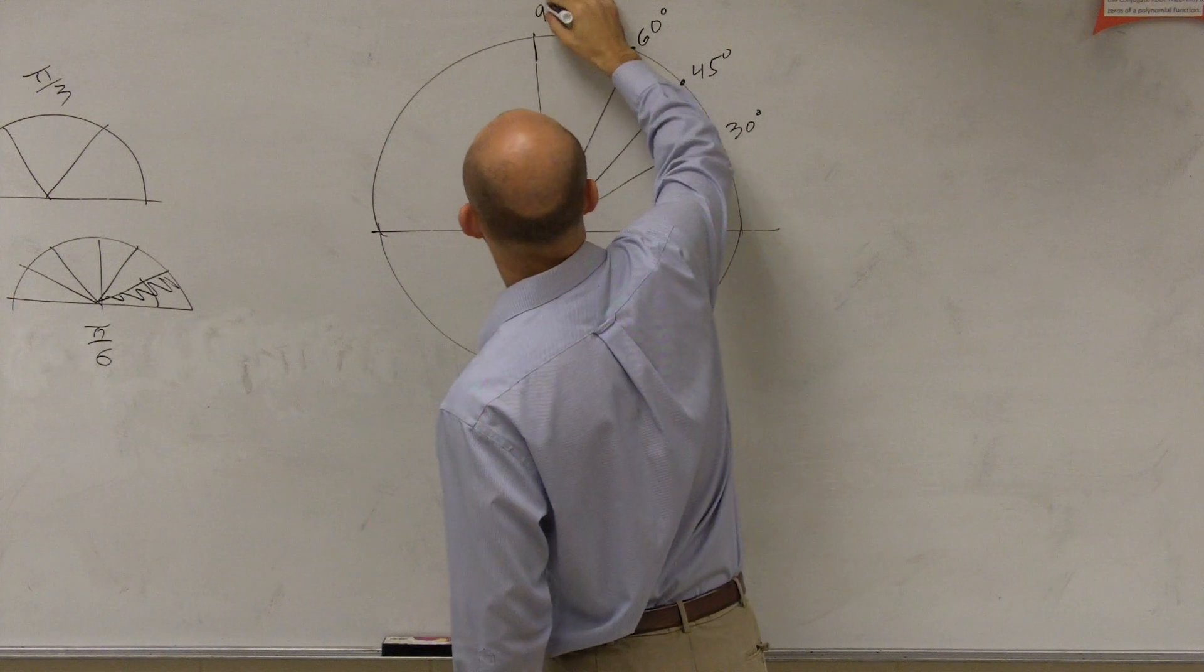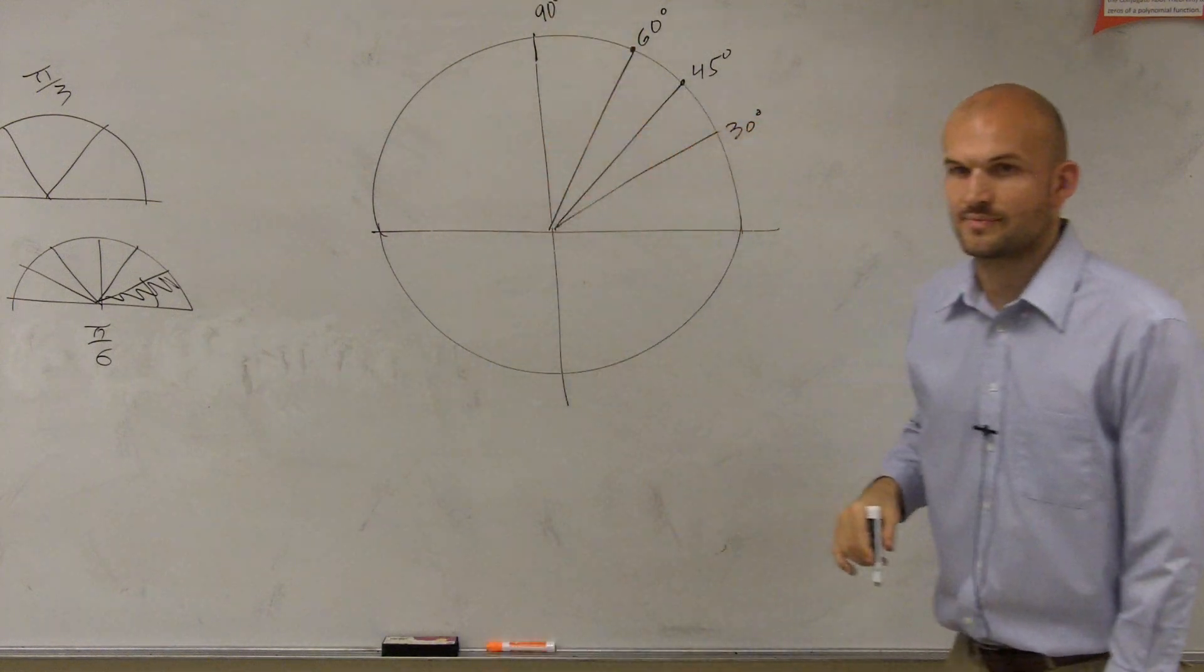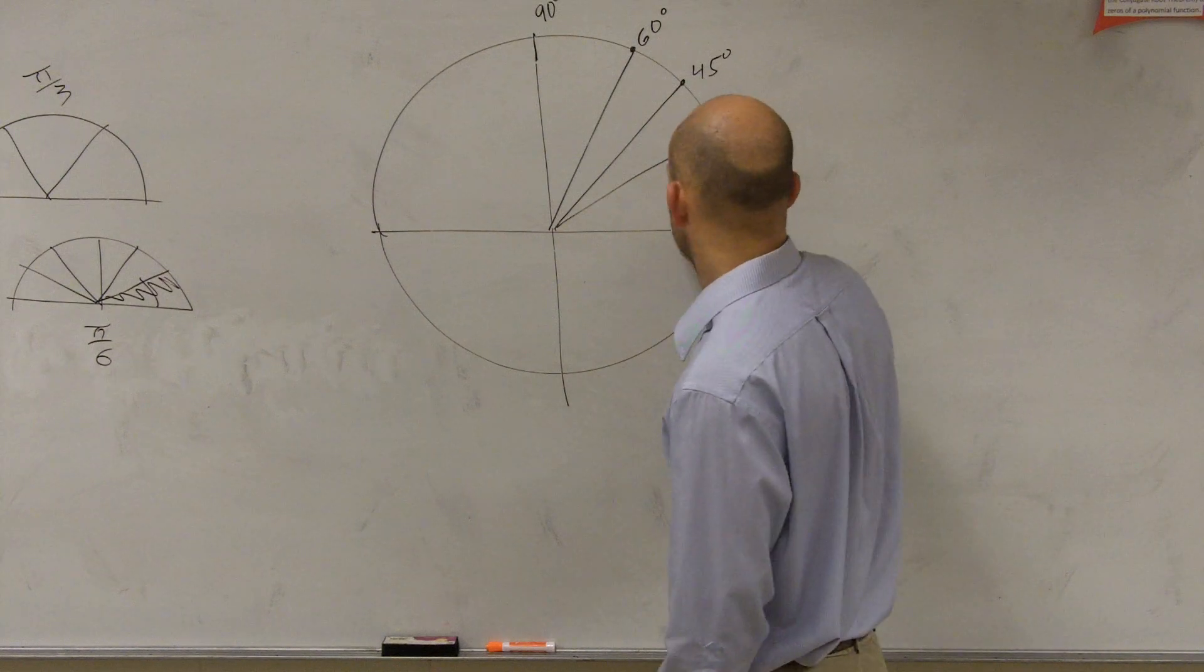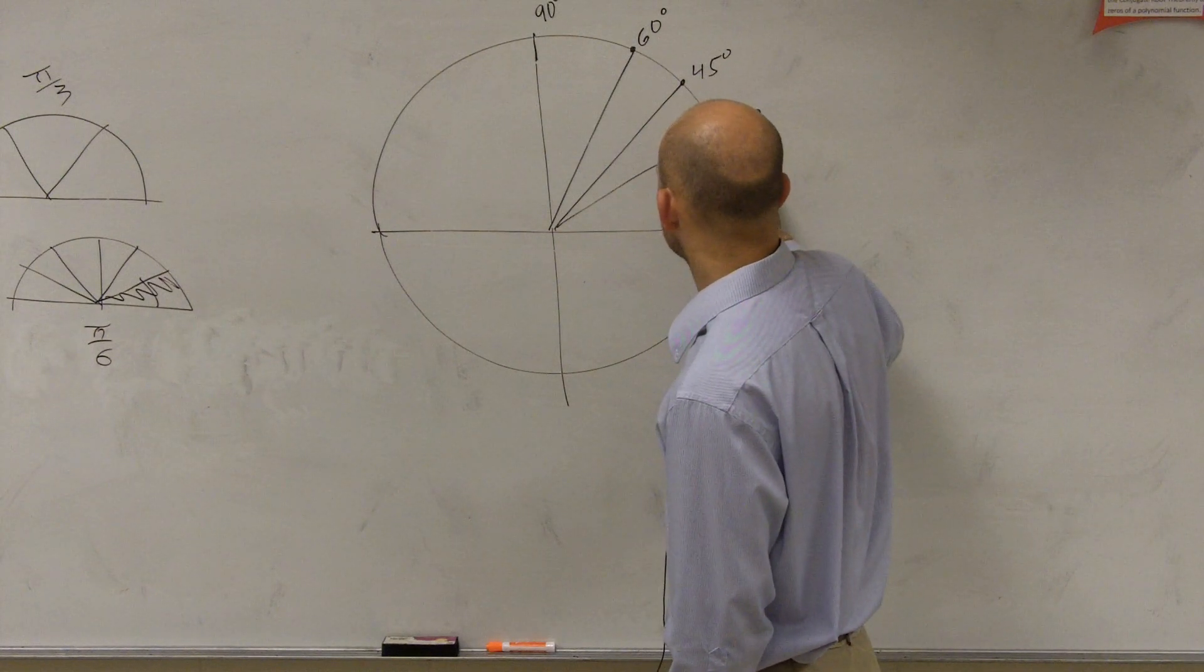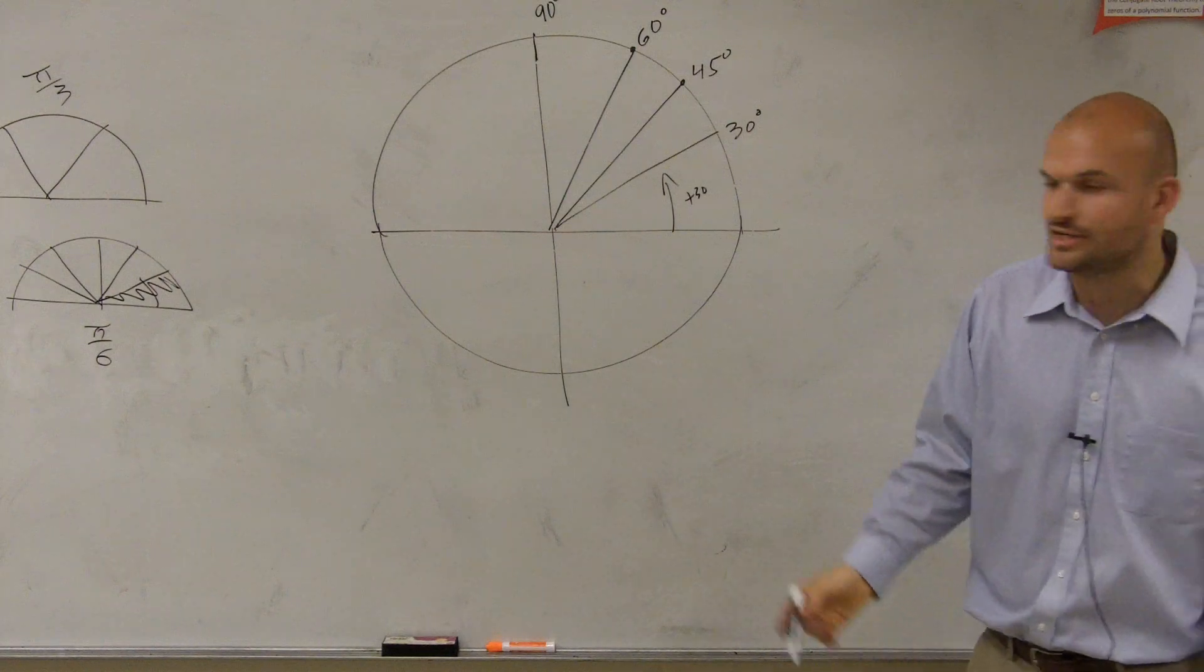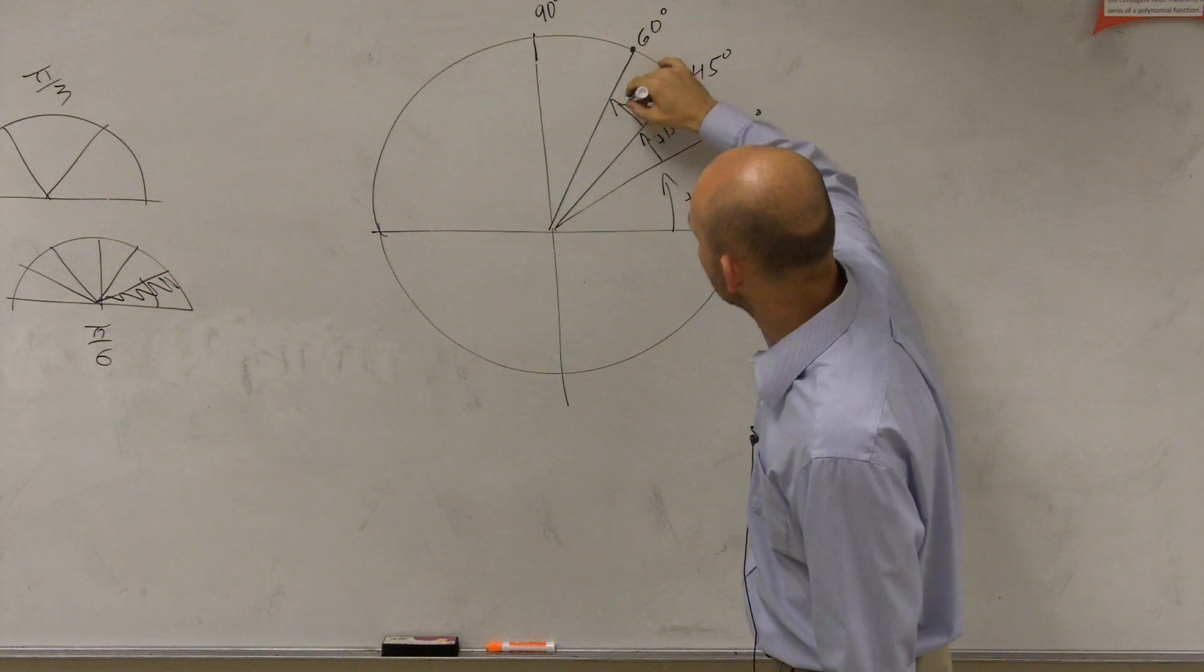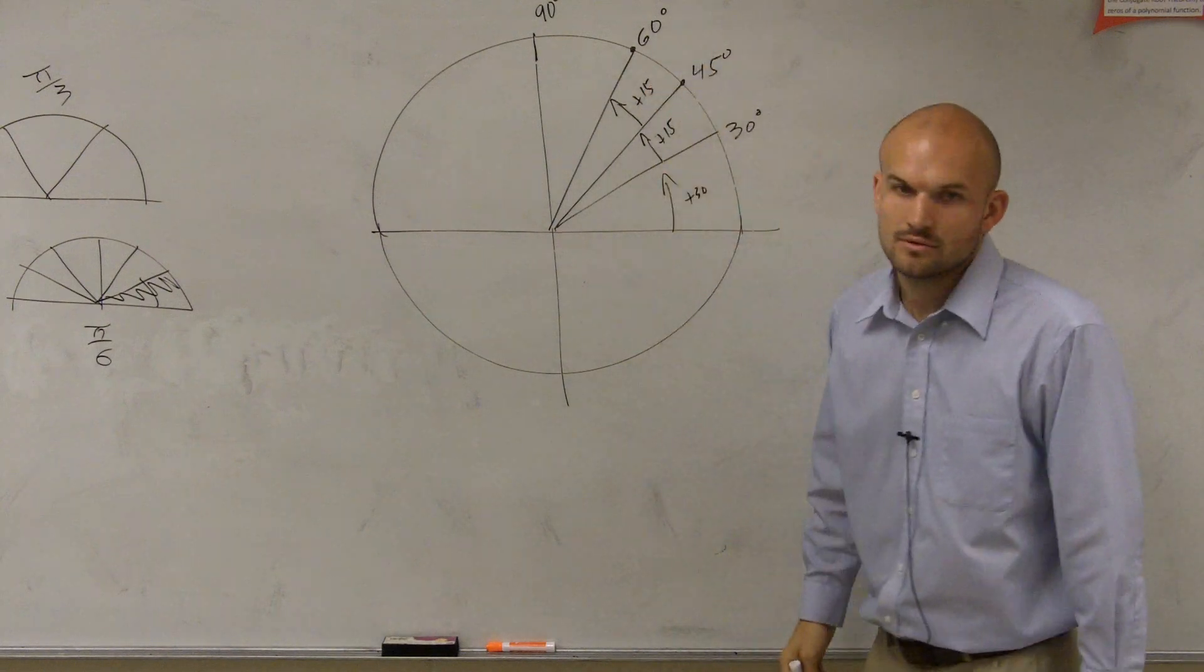And then obviously here is going to be 90 degrees. So really what you can notice is off of every quadrant, you're adding 30 degrees, and then between the two is just adding 15 degrees. So between these angles is just plus 15 and plus 15.